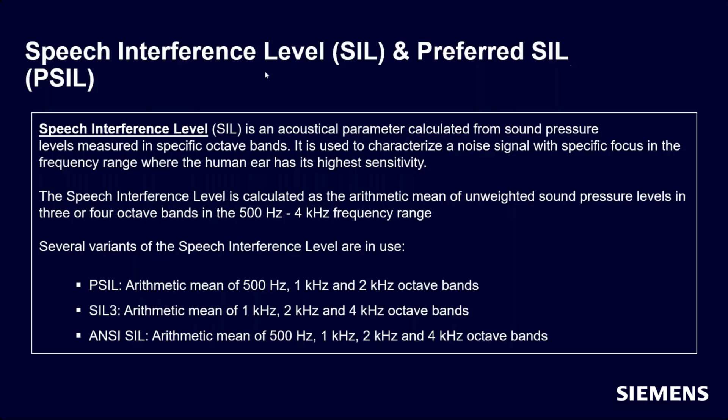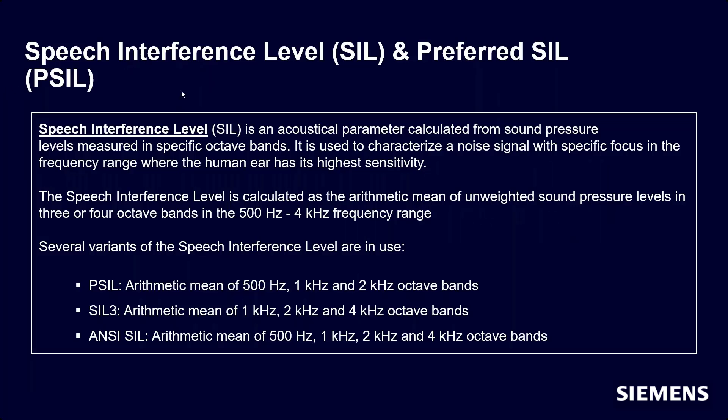A couple years after the articulation index came out, something called the speech interference level came out. It's called SIL. There's also a preferred speech interference level, which just has to do with which octave bands are chosen to calculate this.